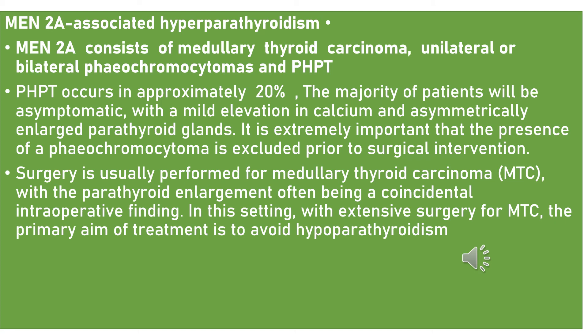MEN type 2A-associated hyperparathyroidism consists of medullary thyroid carcinoma, unilateral or bilateral pheochromocytoma, and primary hyperparathyroidism. Primary hyperparathyroidism occurs in approximately 20% of patients. The majority will be asymptomatic with mild elevation in calcium and asymmetric enlargement of parathyroid glands. It is extremely important that the presence of a pheochromocytoma is excluded prior to surgical intervention. Surgery is usually performed for medullary thyroid carcinoma, with parathyroid enlargement often being a coincidental intraoperative finding. In this setting, with extensive surgery for medullary thyroid carcinoma, the primary aim is to avoid hypoparathyroidism.